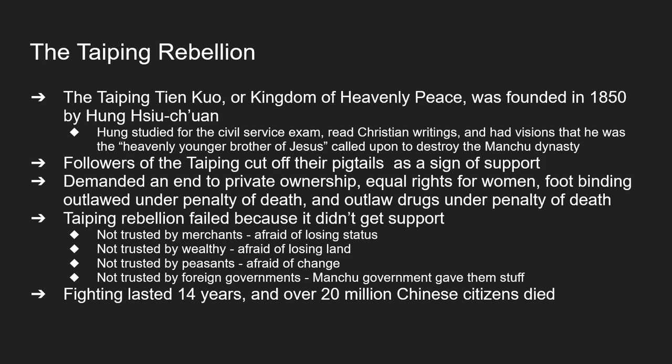Those that followed him became rebels. To show you were a follower of Taiping Tien Kuo, you cut off your pigtail braids. These rebels demanded certain things: equal rights for women, the ability for women to take state examinations and become government officials, an end to private property ownership, and foot binding to be made illegal. Not only that, but the use of liquor, opium, and tobacco became violations punishable by death.